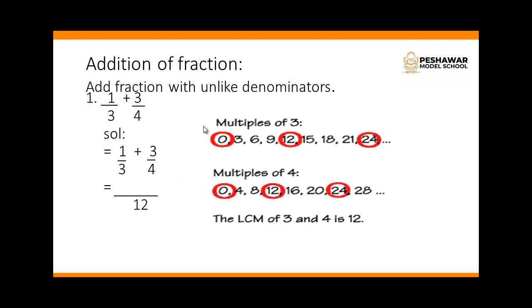So we have to find the smallest common multiple of 3 and 4. For this we write the multiples of 3 and 4 in rough work. So multiples of 3: 0, 3, 6, 9, 12, 15, 18, 21, 24 and so on.